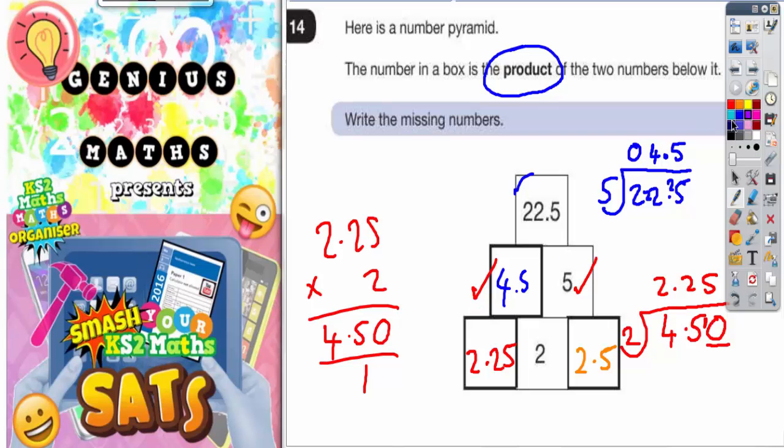Finally, we've got these 2 multiplied together: 4.5 times 5 to get the very top one, 22.5. So 4.5 times 5 - we hope to see 22.5. 5 times 5 is 25, put the 5 in, carry the 2. 5 times 4 is 20, plus 2 is 22. Put your decimal point in - 22.5. So all the numbers work out. Therefore, we must have completed the number pyramid correctly.